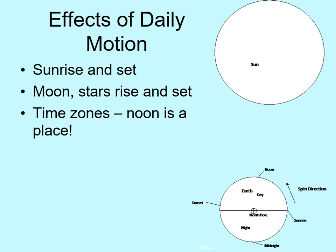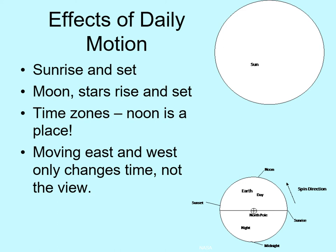This also affects what we see in the sky. If you want to see what's in the sky over the east coast, just wait a few hours and we'll have the same view. Moving east or west on the globe only changes what time it is, not what you will see at a given time. So if we see a star overhead at 9 p.m., then someone on the other side of the globe will see the same star overhead when it's 9 p.m. where they are.